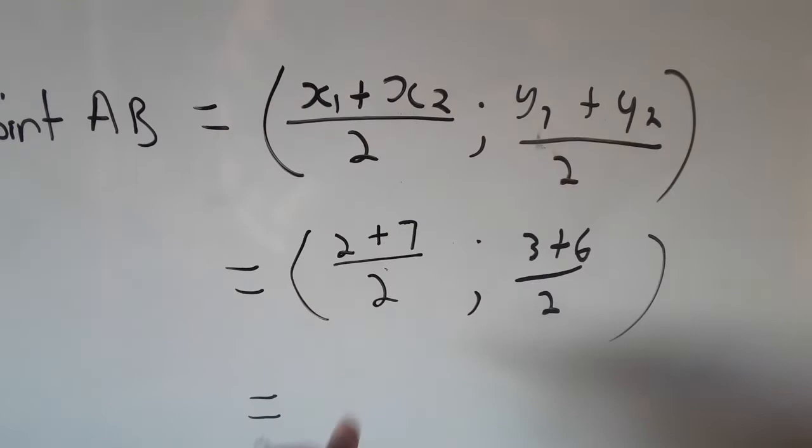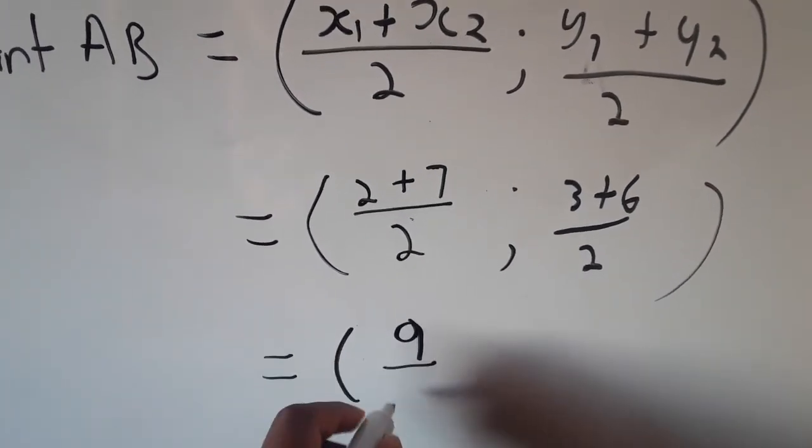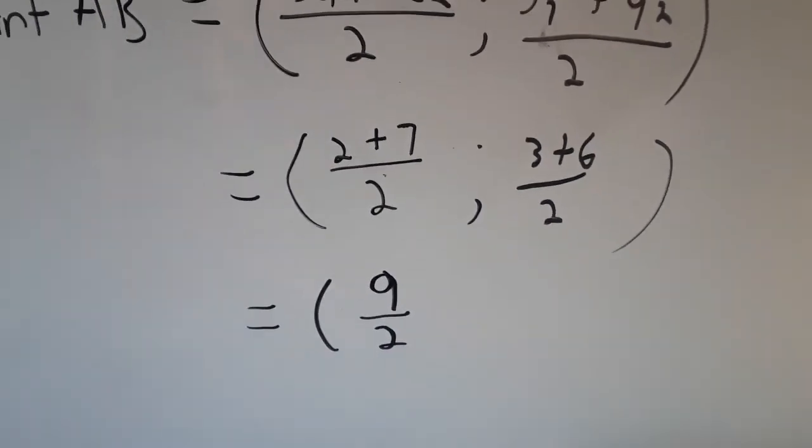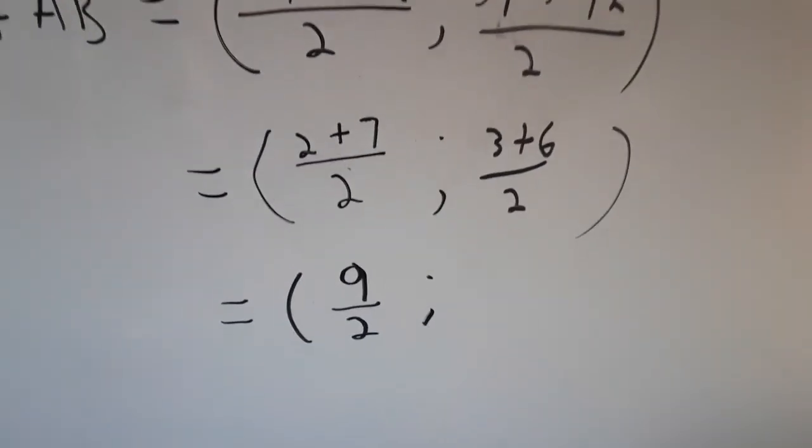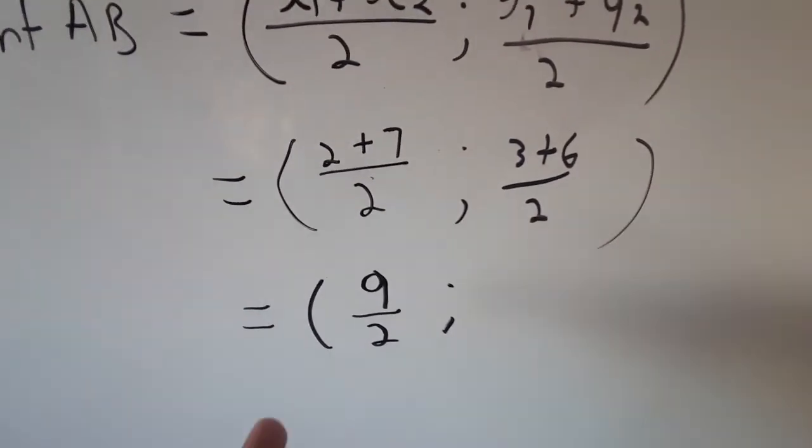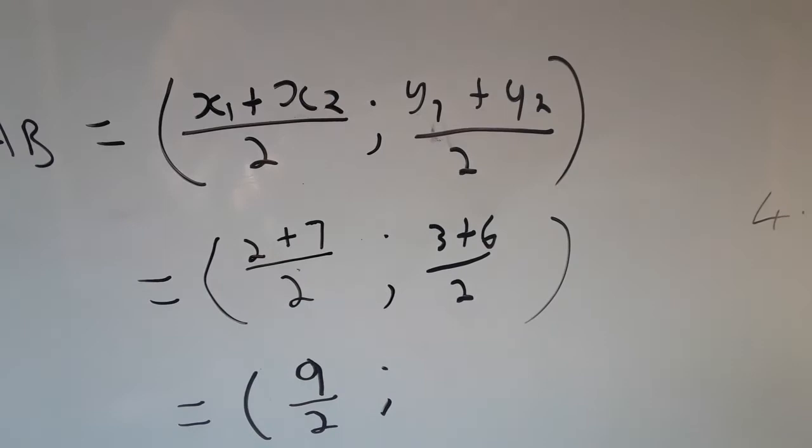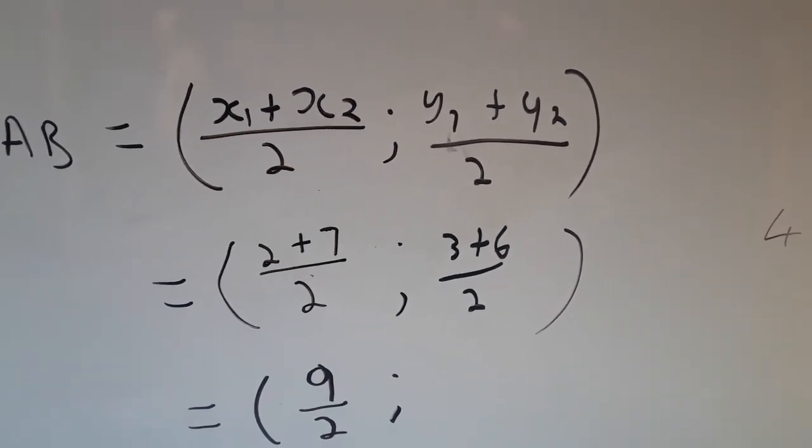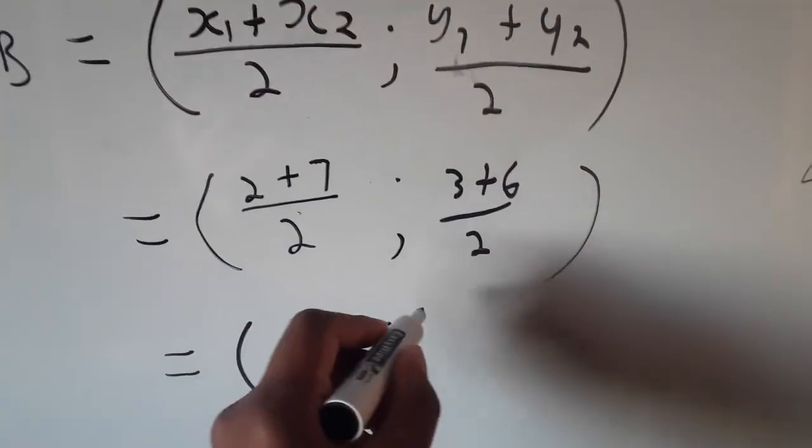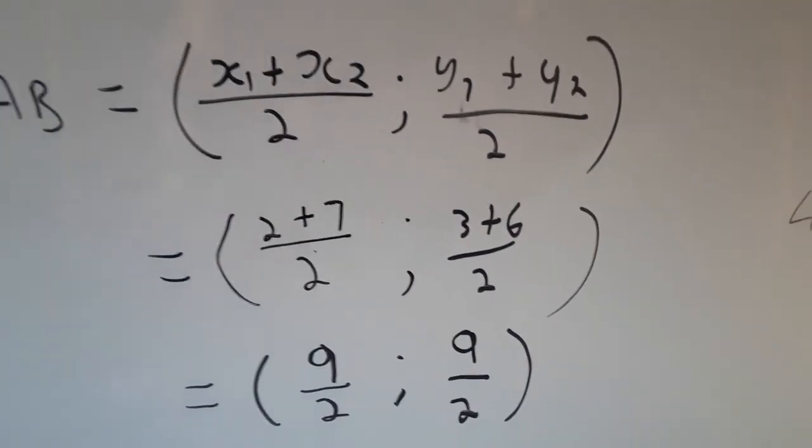So 2 plus 7 is 9, so we have 9 over 2 as our x-value.